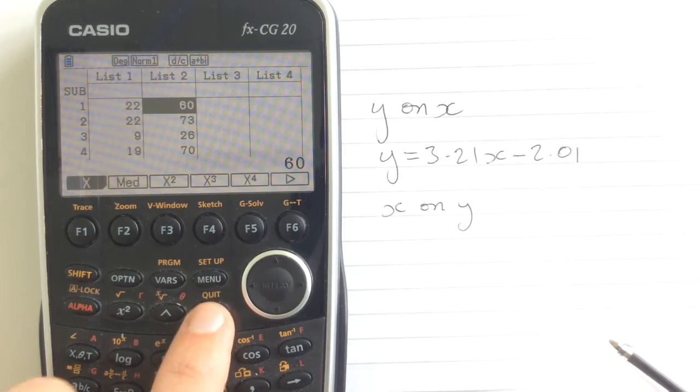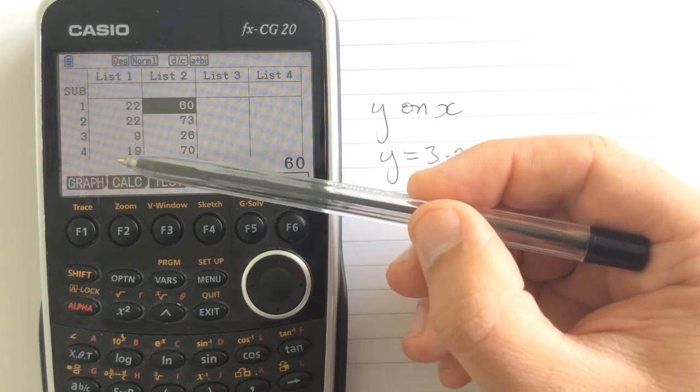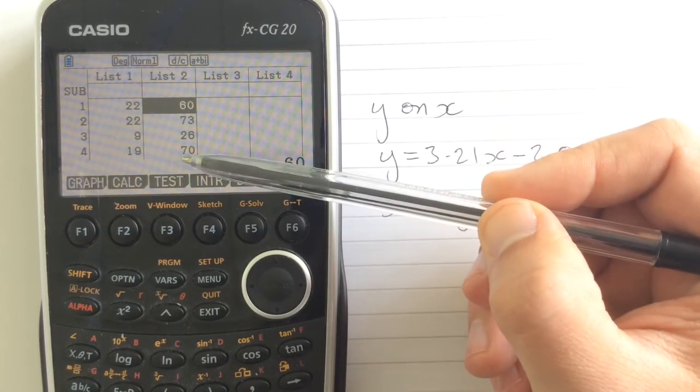If we come back out of this and we come back into our data, we were going to work out our regression line. What we've done of course is that we've put our x values in list one and our y values in list two.